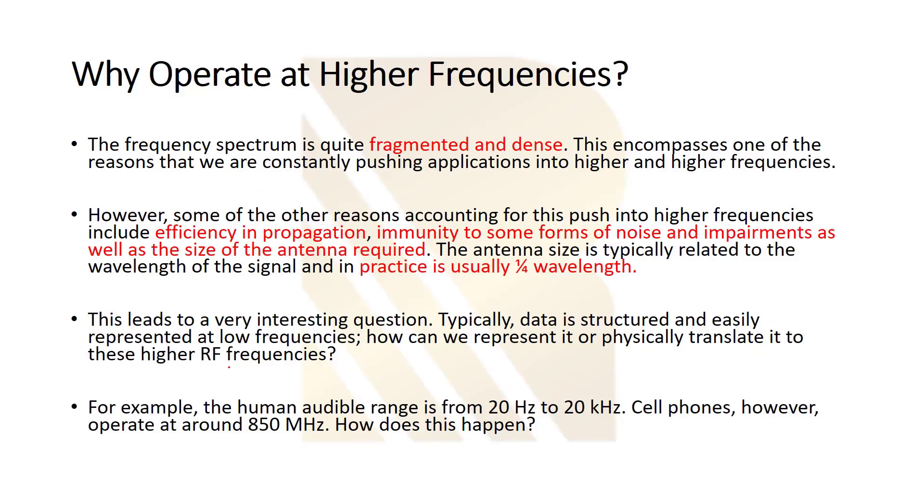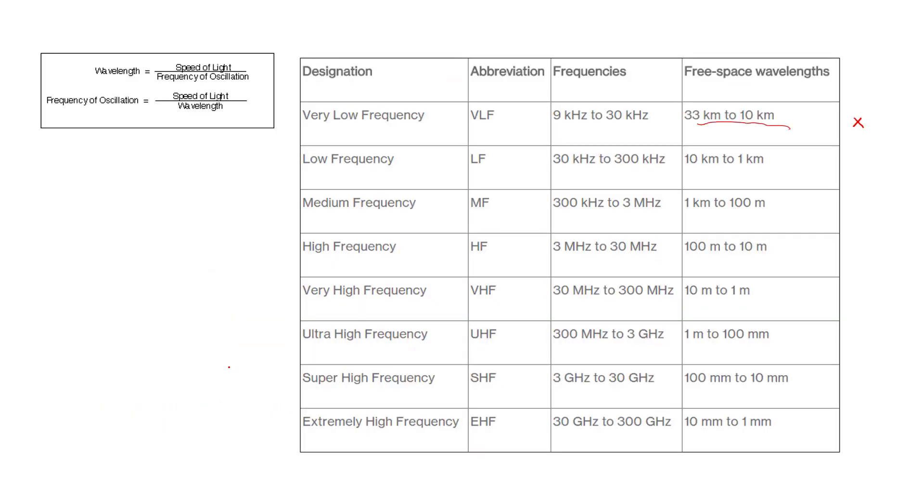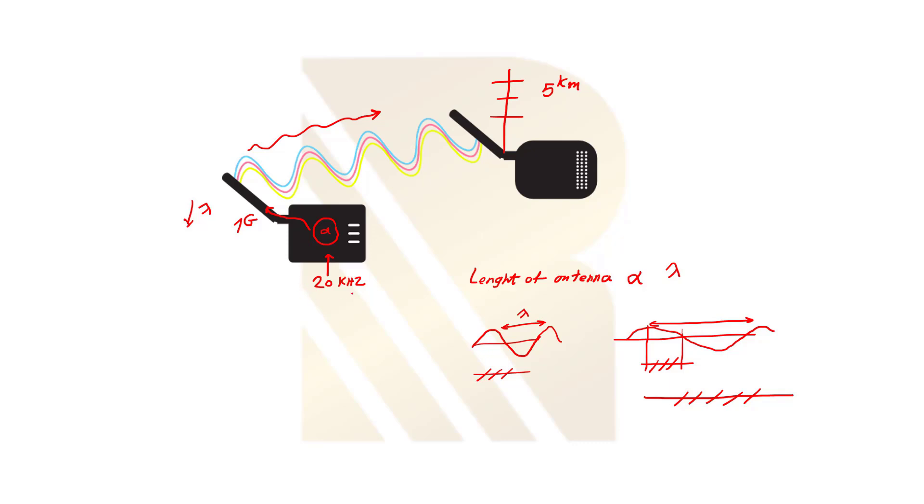We can also explain: the data is structured and easily represented at low frequencies. How can we represent it or physically translate it to these higher frequencies? We just learned that by using a transmitter, we can translate the low frequency to high frequency without losing our data. The human audible range is from 20 Hz to 20 kilohertz. For example, in a cell phone, we don't have data which has a frequency of one gigahertz. First, we have to increase the frequency of this data and make it RF frequency. We need high frequency to have small lambda and small antenna size. That's the reason we increase the frequency of our data.